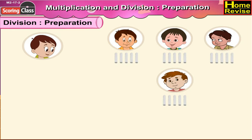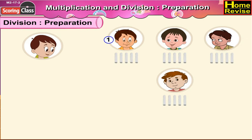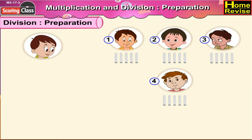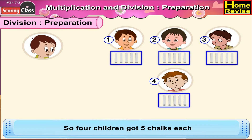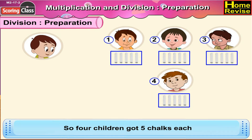Now, let us count the total number of children. One, two, three, four. So, four children got five chocks each.